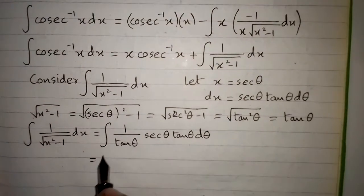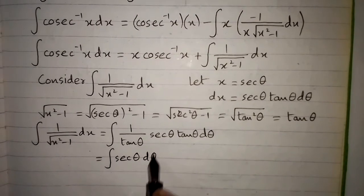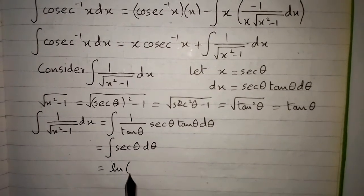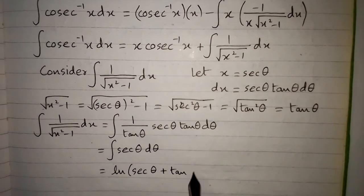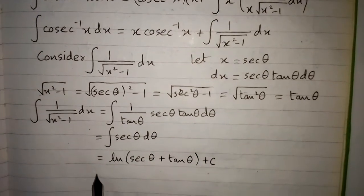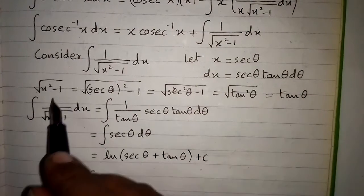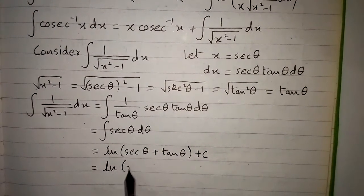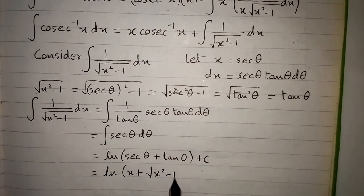This simplifies to the integral of sec θ dθ, which equals ln of |sec θ plus tan θ| plus C. Substituting back, sec θ equals x and tan θ equals square root of x squared minus 1, giving ln of x plus square root of x squared minus 1, plus C.